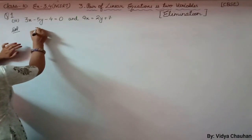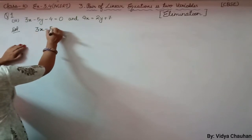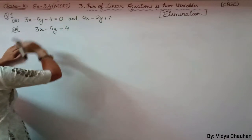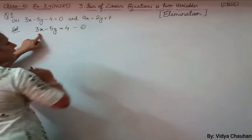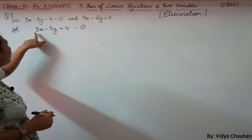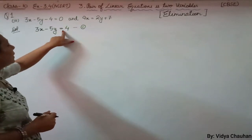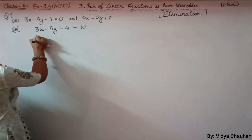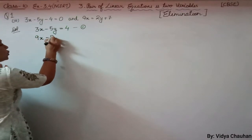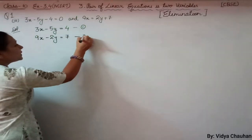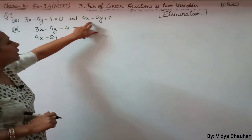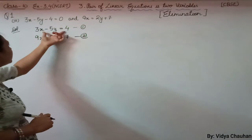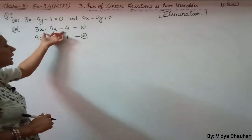For equation number 1, I can write it as 3x minus 5y equals to 4, by shifting minus 4 to the right-hand side. This is equation number 1. Similarly, for the second equation, I can write it as 9x minus 2y equals to 7, by moving the y variable to the left-hand side. This is equation number 2. Now you can see that our equations are somewhat alike in format.